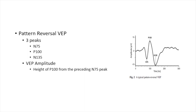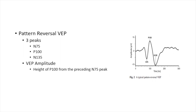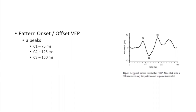The amplitude of the P100 wavelet is measured from the maximum peak to the trough. For pattern onset/offset VEP, instead of the negative-positive-negative sequence seen in pattern reversal, we see a positive-negative-positive sequence — almost the mirror image. To avoid confusion, the nomenclature changes from N/P to C1, C2, C3. On average, C1 comes around 75ms, C2 around 125ms, and C3 around 150ms from stimulus onset.